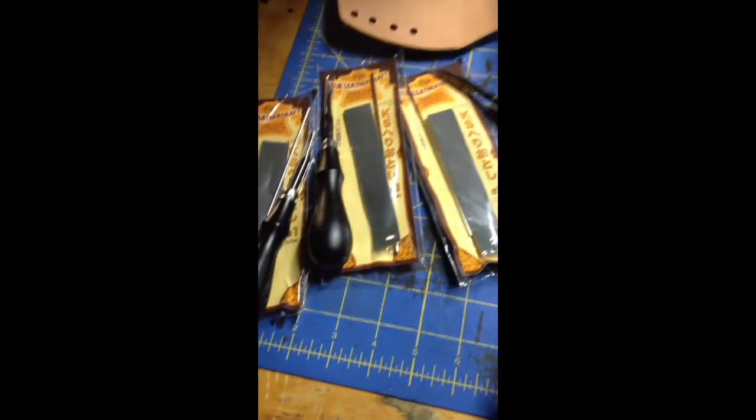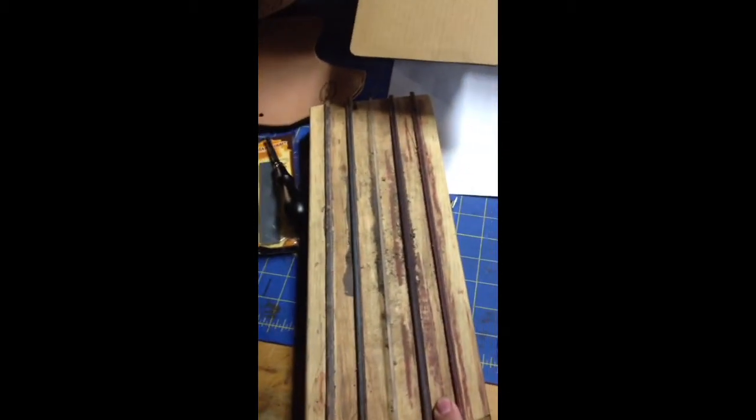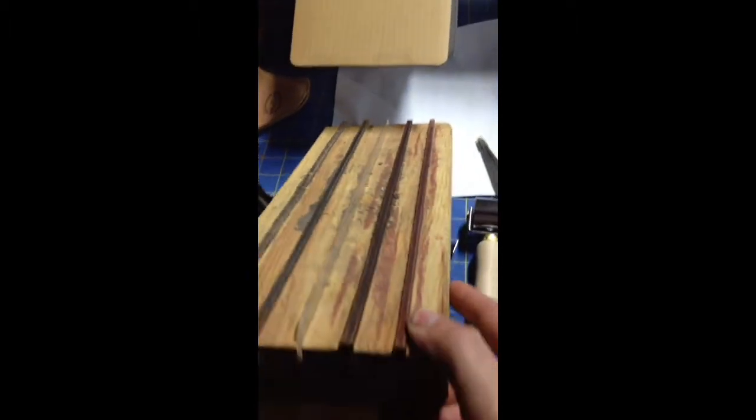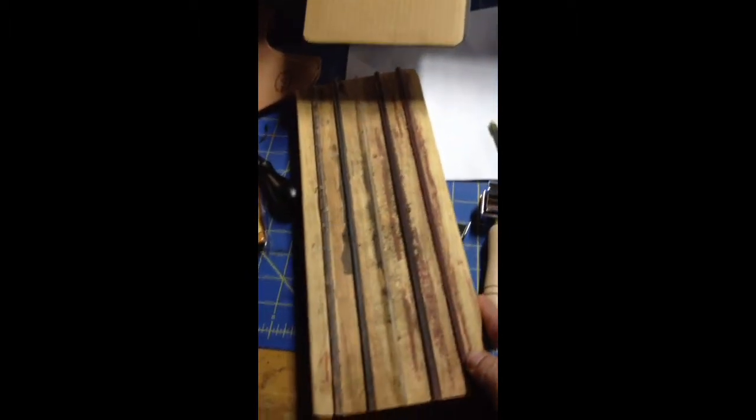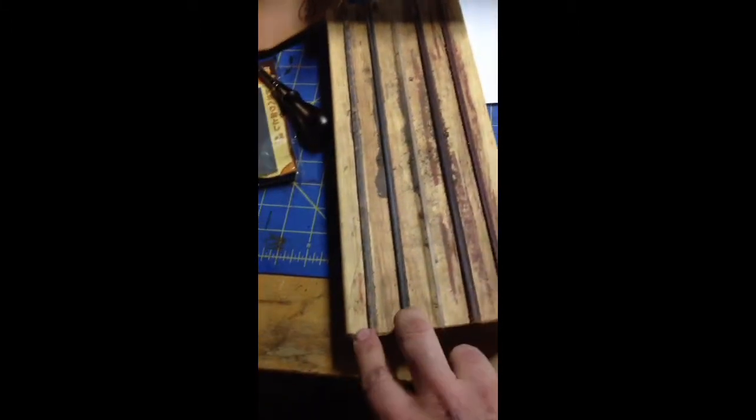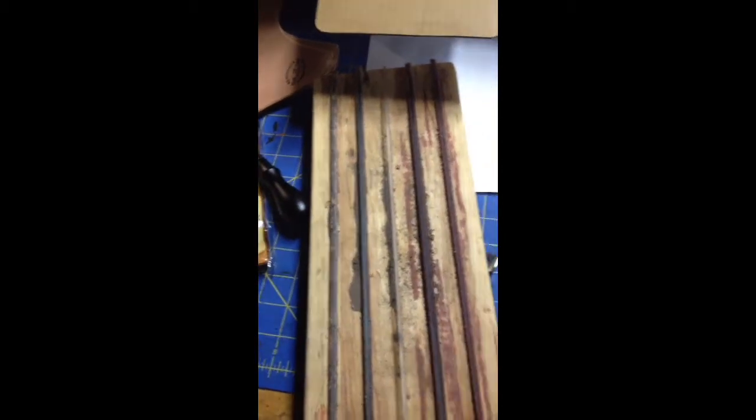The system that I've been using up to this point for sharpening the Tandy bevelers is using this beveling sharpening apparatus. You can actually buy this from Weaver leather. It's just a board with four strips of leather glued into grooves in the wood.